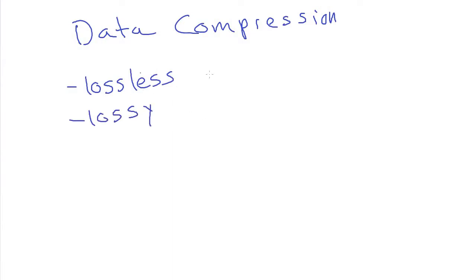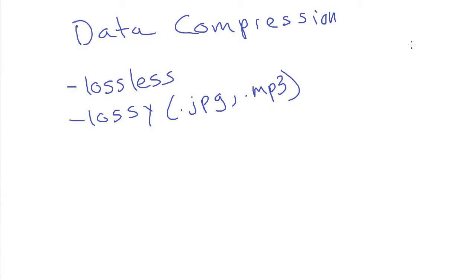The difference is that lossless preserves all of the information exactly perfectly, whereas lossy can degrade the information slightly. You might ask what is the point of lossy compression if you're not actually storing the data perfectly. But the answer is for things where we value file size more than exact representation. A good example is the JPEG image file format, where we don't necessarily care if you have exactly the right colors, as long as it looks close enough to the original picture that the human eye can't tell the difference.